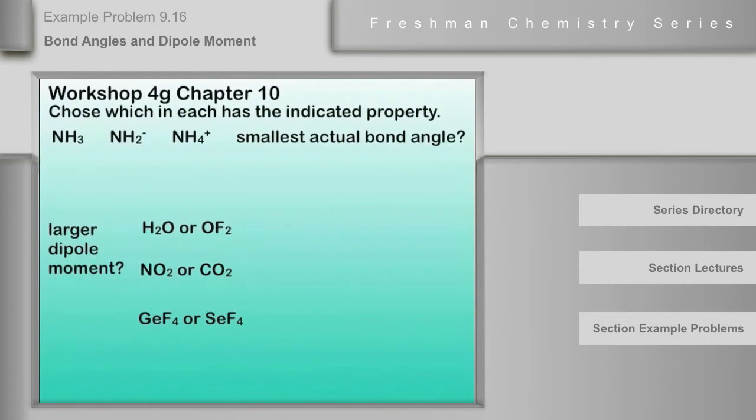Choose which in each case has the indicated property. The first set of things here are molecules and ions, and we want the smallest actual bond angle. Now, if we look at these, ammonia is AX3E.